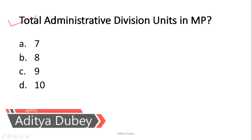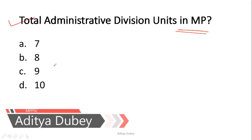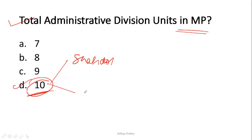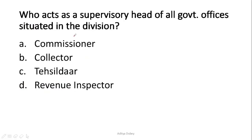The first question is: what is the total number of administrative division units in MP? The answer is Option D, which is 10 — there are 10 total administrative division units in MP. If we talk about the smallest division, it is Shahdol. If we talk about the largest division, it is Jabalpur. These two facts you can remember.